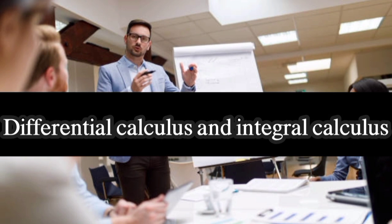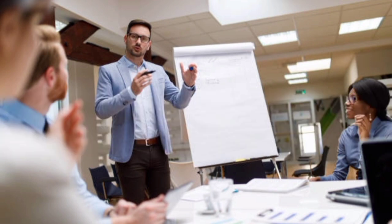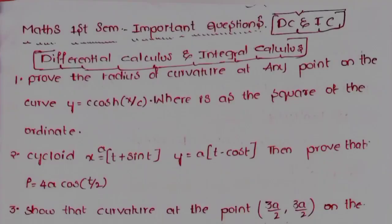I will include important questions about differential and integral calculus. First, prove the radius of curvature at any point on the curve y = c·cosh(x/c) is equal to the square of the ordinate.